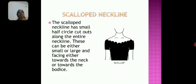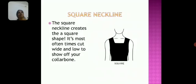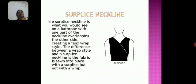Scalloped neckline: this neckline has small half-circle cutouts along the entire neckline. These can be either small or large, facing either towards the neck or towards the borders. Square neckline: the square neckline creates a square shape and is most often cut wide and low to show off your collar bone.